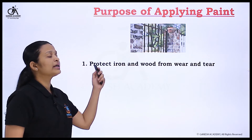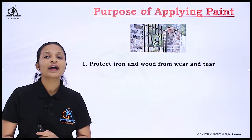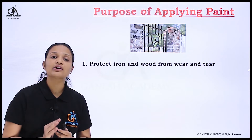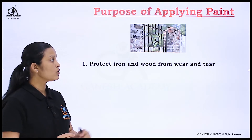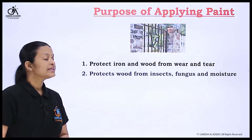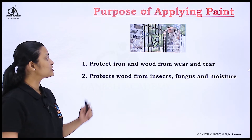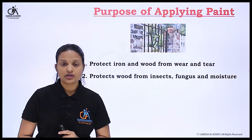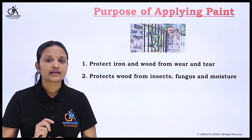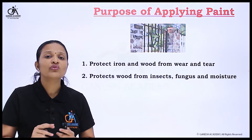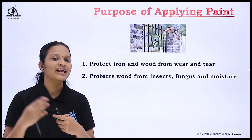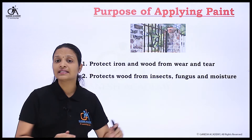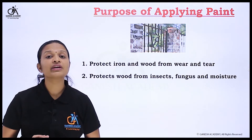The first purpose is to protect iron and wood from wear and tear — we can protect wooden and metal articles from wear and tear. The second purpose is to protect wood from insects, fungus, and moisture. When we apply paint on wooden articles, moisture cannot react directly with the wood, and fungus and insect activity can be controlled.